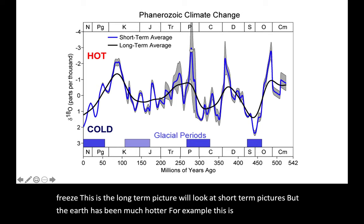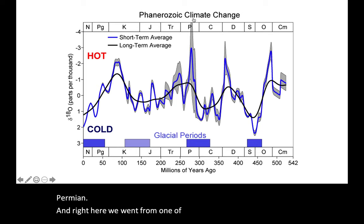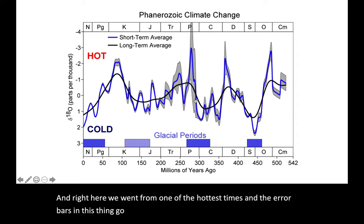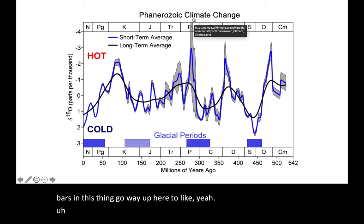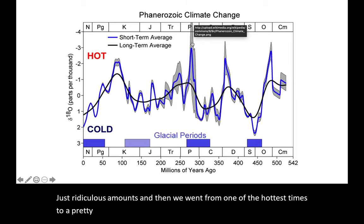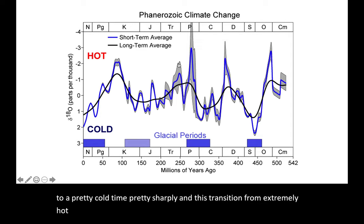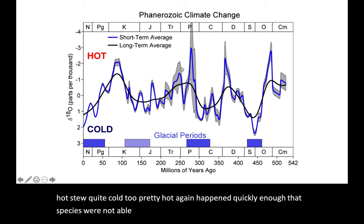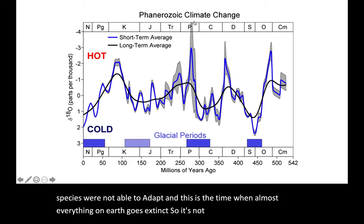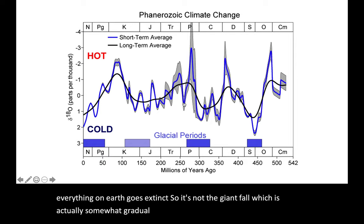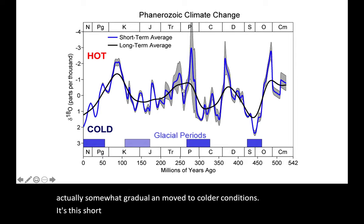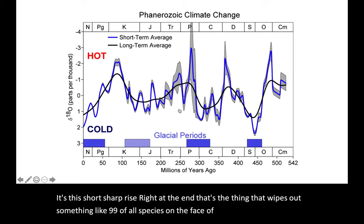Right here in the Permian, we went from one of the hottest times — and the error bars on this thing go way up — to a pretty cold time pretty sharply. This transition from extremely hot to quite cold to pretty hot again happened quickly enough that species were not able to adapt. This is the time when almost everything on Earth goes extinct. It's not the giant fall, which is actually somewhat gradual and moved to colder conditions — it's this short, sharp rise right at the end. That's the thing that wipes out something like 99% of all species on the face of the Earth.